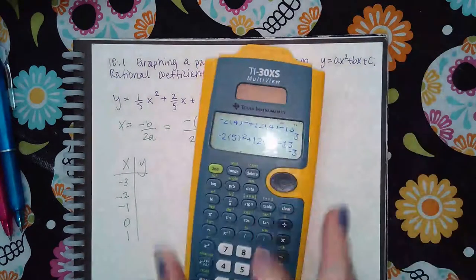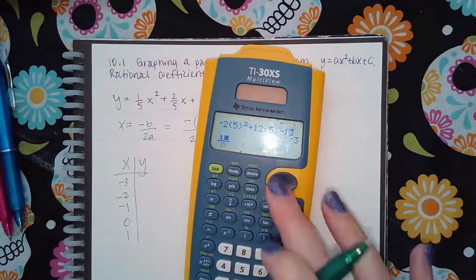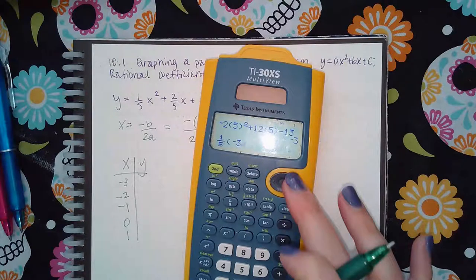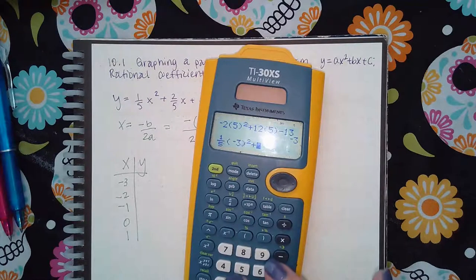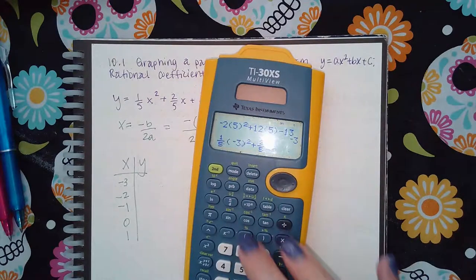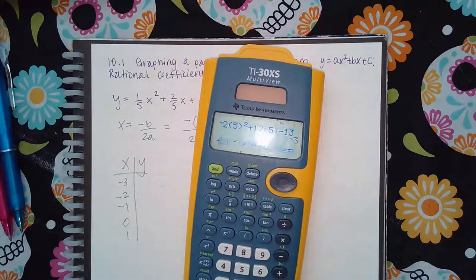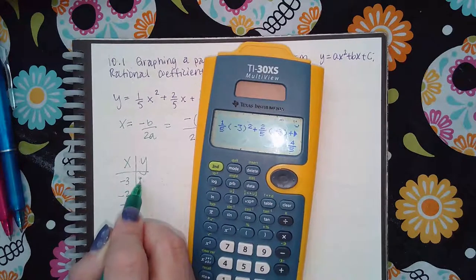All I'm doing is plugging in each number into the function. So I'm going to start with negative 3 squared plus 2 fifths times negative 3 plus 1 fifth, and I get 4 fifths.